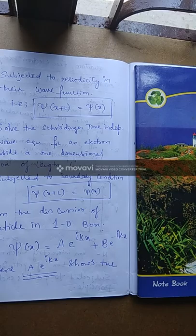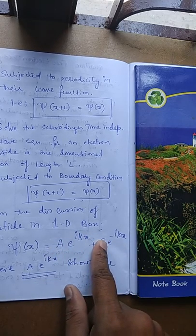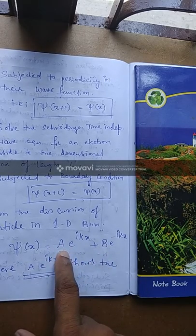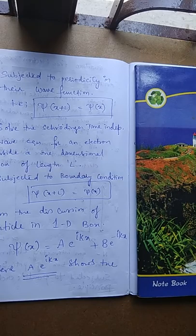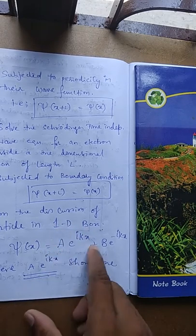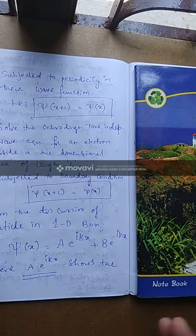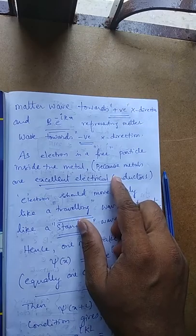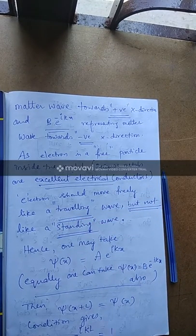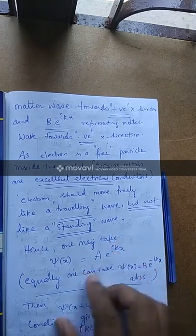The standing wave solution is not acceptable here because inside the metal we assume electrons are free to move randomly at every point with no preference for any location. Therefore, we must accept the traveling wave solution instead. We consider only one traveling wave — either direction. Here we choose ψ(x) = A·e^(ikx), the wave traveling along the positive x direction, which gives equal probability at all regions.